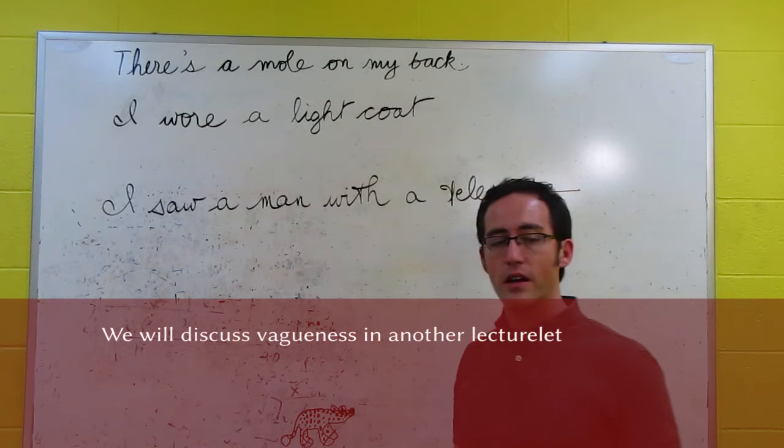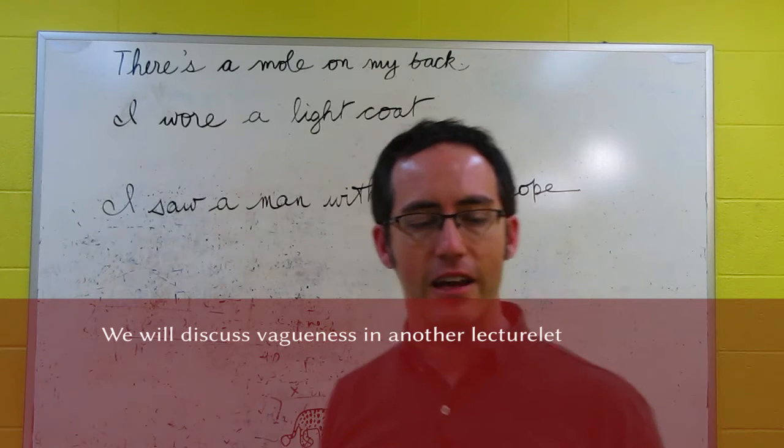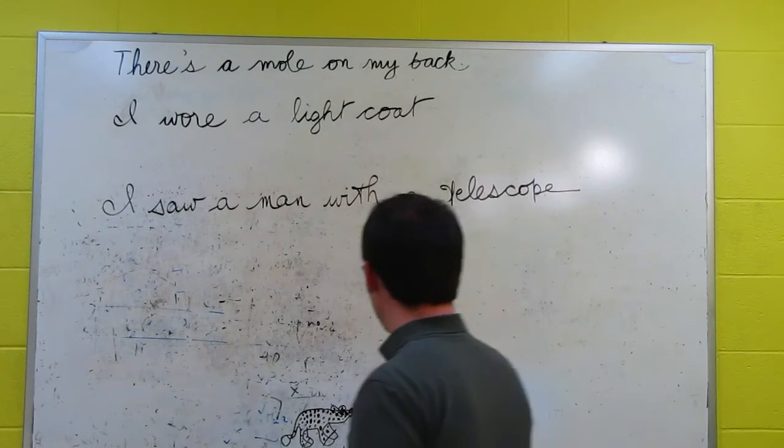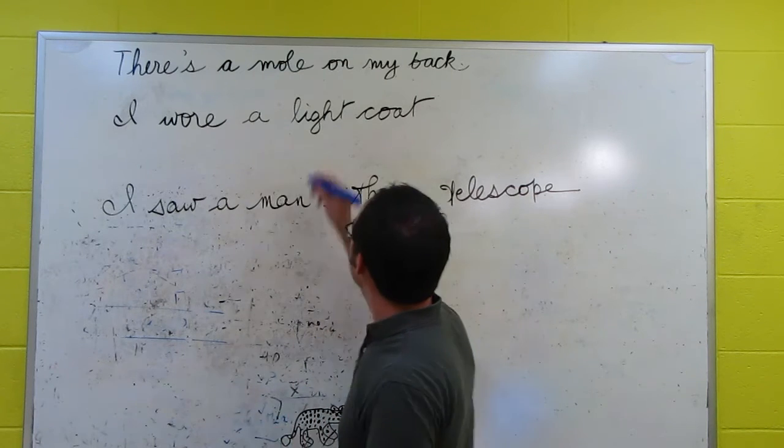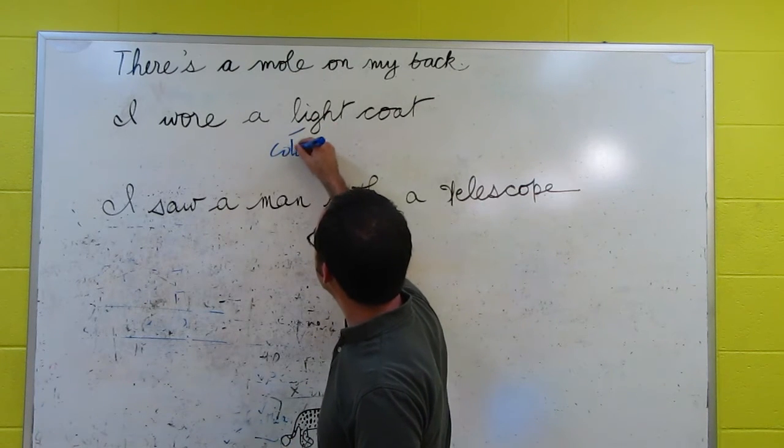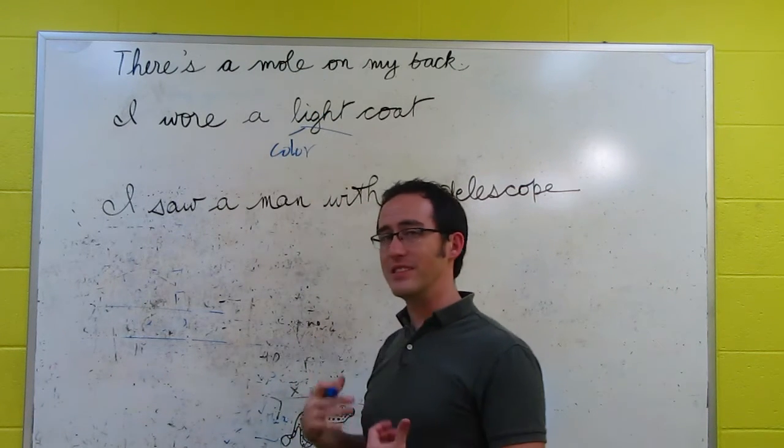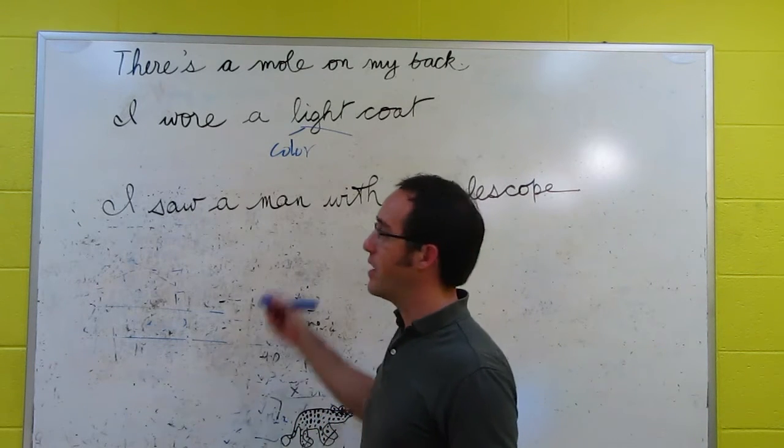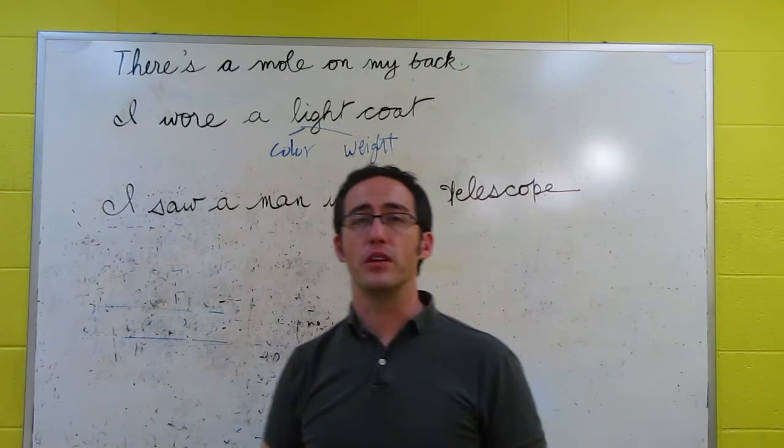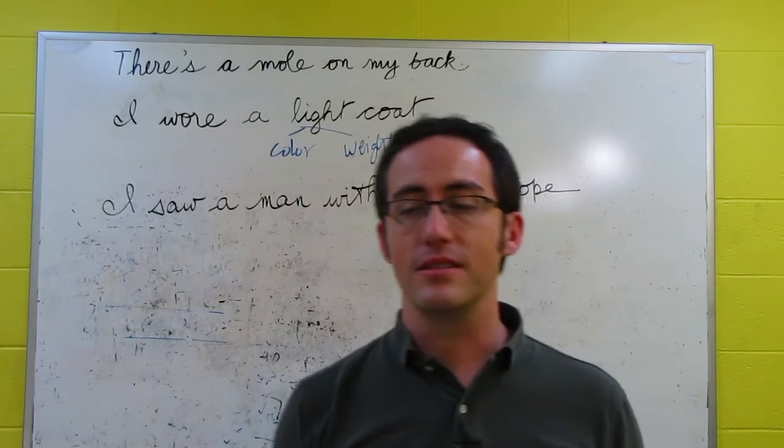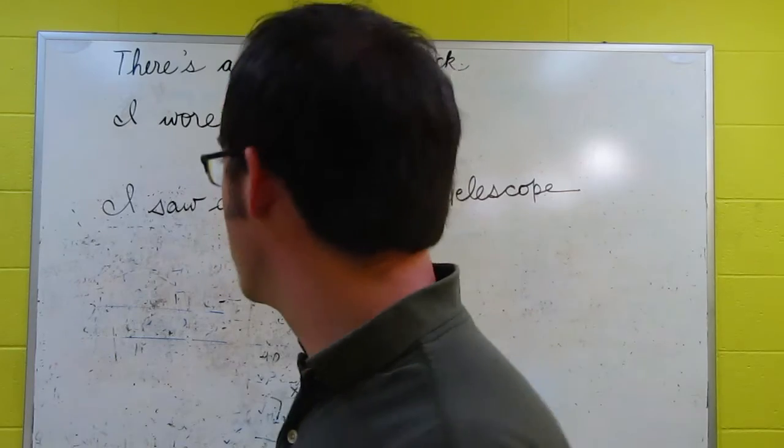So if I say I wore a light coat, that could mean that it's light in color, or it could mean that it's light in weight. So if it's light in color, it's not dark. If it's light in weight, it's not heavy. And thinking about these antonyms helps us disambiguate them. And we can use these antonyms in follow-ups as well.